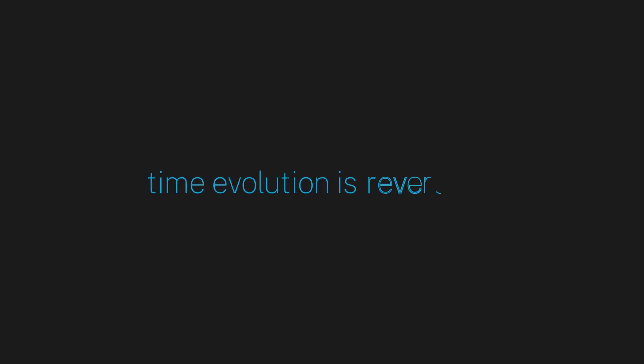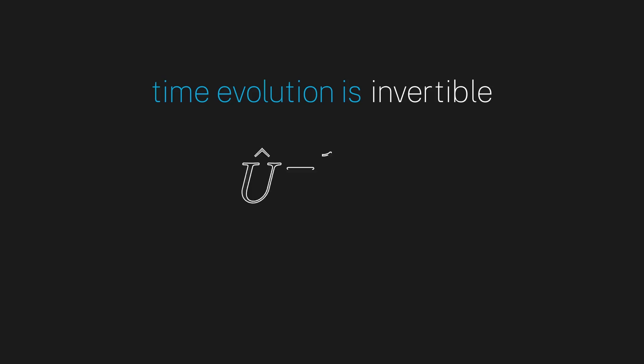Next, we want to use the intuition that we expect time evolution to be reversible. In other words, if we time-evolve a particle forward by two seconds, it should be possible to time-evolve it backwards by two seconds and get our initial state back. Mathematically, this means we expect that time evolution is invertible and U inverse exists. This might seem obvious, but in a few moments you'll see why this is an important point.